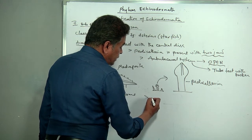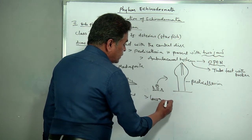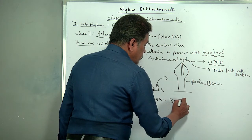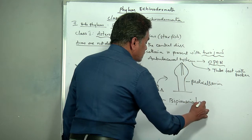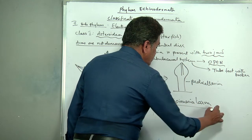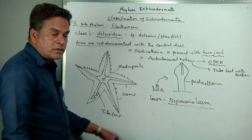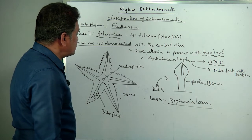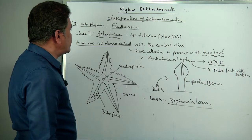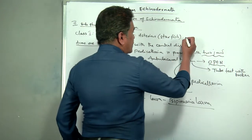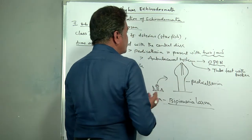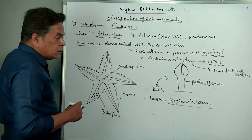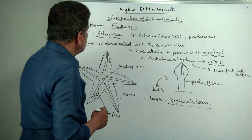The larva of starfishes in Asteroidea is bipinnaria larva — every class has a different larva. Examples under Asteroidea: Asterias (starfish), Pentaceros, and Astropecten. All starfishes are included under Asteroidea — 'Aster' means star and 'eidos' means form, hence the name starfishes.